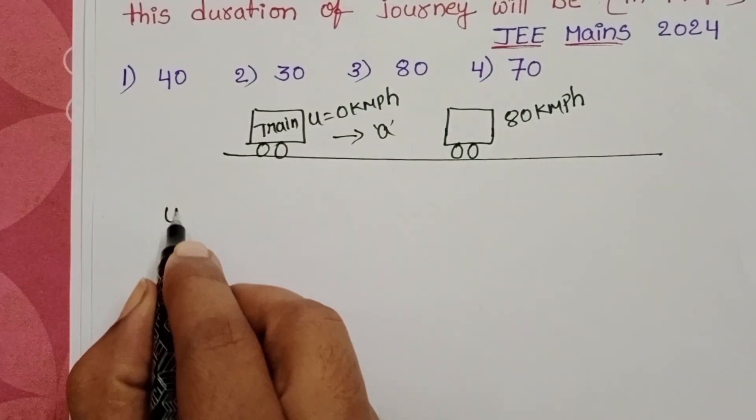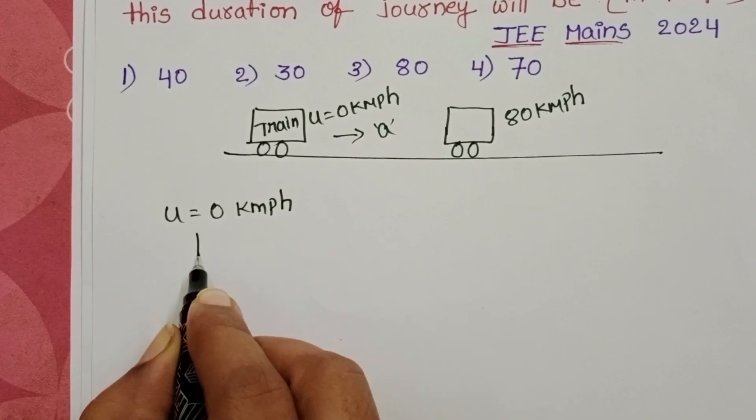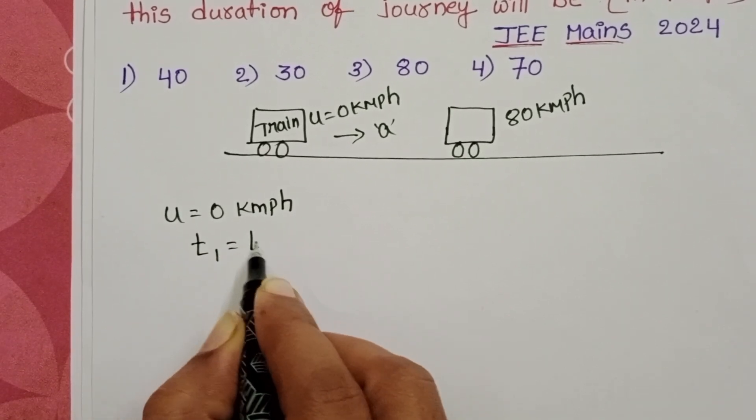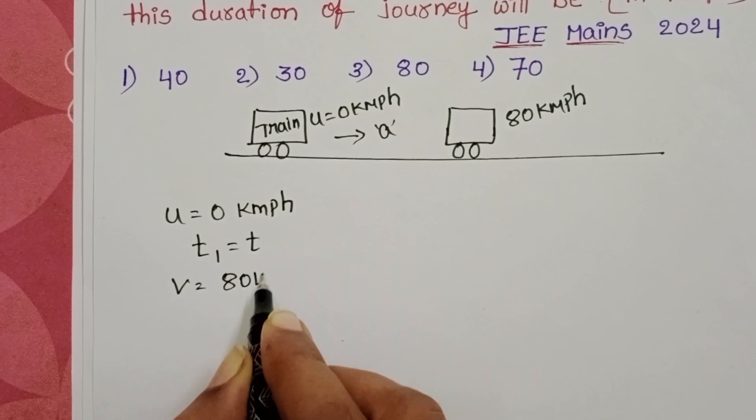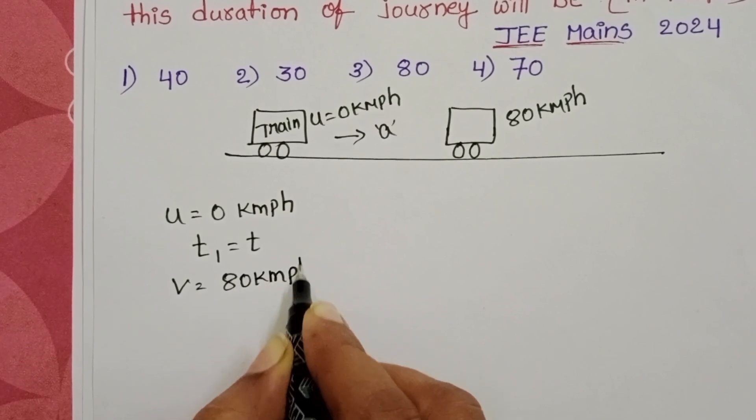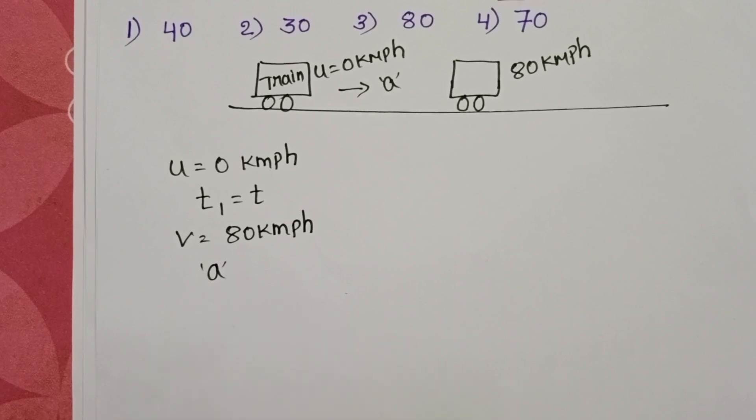0. After time t, speed of the train changes to 80 km per hour. And given acceleration is uniform acceleration.